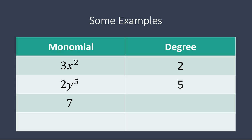Now there's a little bit of a trick question. What if I have just a number, 7? I'm going to refer back to my previous lesson on the basics of polynomials. If you have a number by itself, it's like the variable has an exponent of 0. Anything to the power of 0 is 1, so it would be like 7 times 1, and we just write it as 7. So our monomial of 7 has a degree of 0.